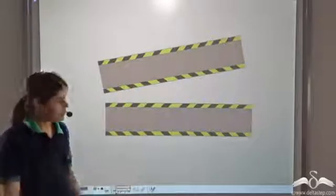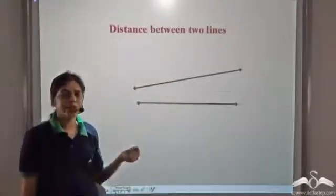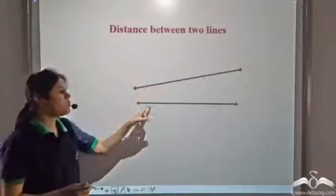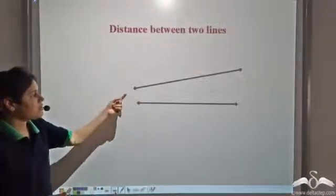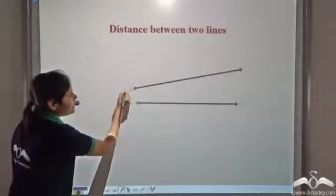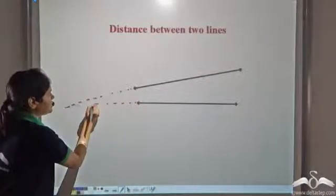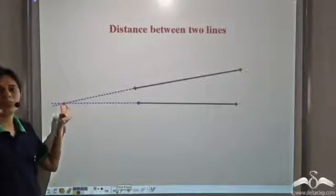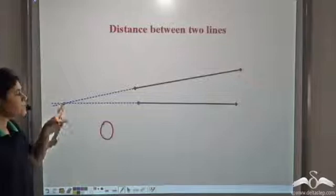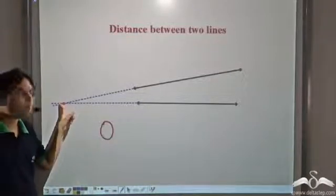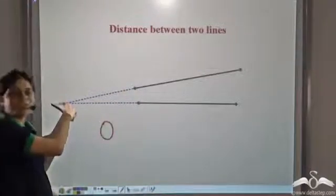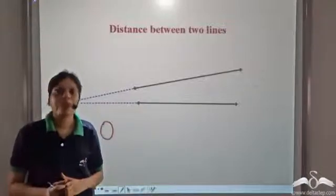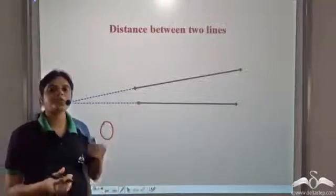Now we have these two streets — consider them to be two lines. What is the distance between these two lines? Distance between two lines is the minimum distance between two points on these lines. If you observe, these are intersecting lines. So if we extend them, these lines will intersect at this point. The minimum distance between these two lines is zero because they share a common point, and at this point the distance between the two lines is zero. So the distance between two intersecting lines is always zero.